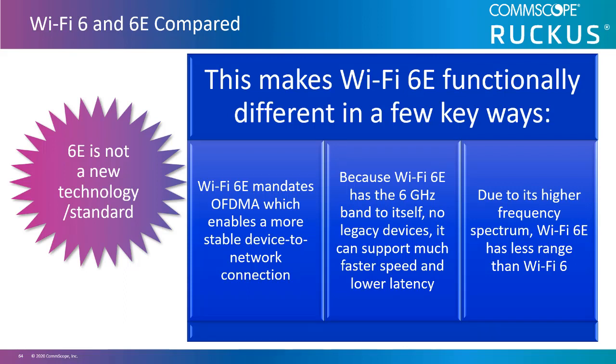Wi-Fi 6E is not a new technology, but instead new lanes on the wireless highway dedicated to express devices. Because it is only dedicated to the new standard, only OFDMA will be used, providing high efficiency when forwarding data. Legacy devices will not need to be supported, providing faster forwarding and lower latency. Higher frequency does come with a cost — less range than lower frequency counterparts — however, 802.11ax supports all three frequency ranges, providing broad support, range, and coverage. With less possible interference, 6E will be welcomed spectrum to push the limits of speed and efficiency in Wi-Fi networks.